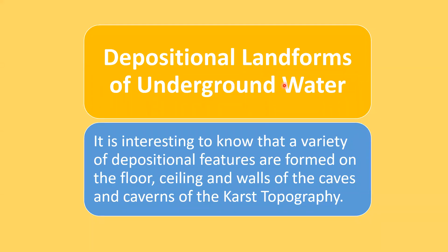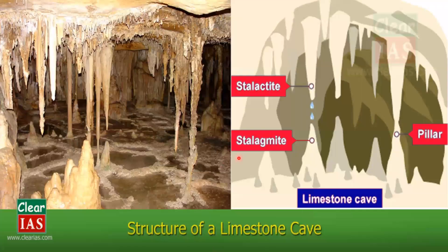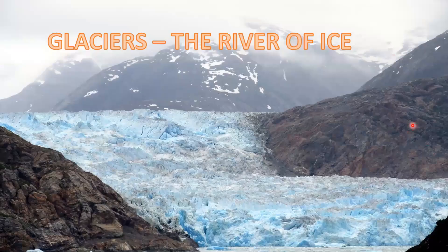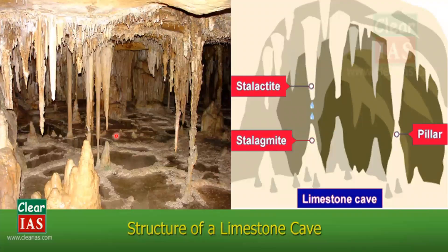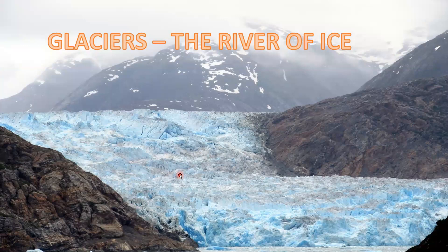Depositional landforms of underground water: A variety of depositional features are formed on the floor, ceiling, and walls of the caves and caverns of karst topography. We have already seen stalactites, stalagmites, and pillars. With this, the study of the action of underground water in limestone regions comes to an end. Next, we are going to see glaciers — one of the important agents of erosion.